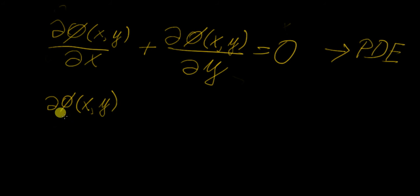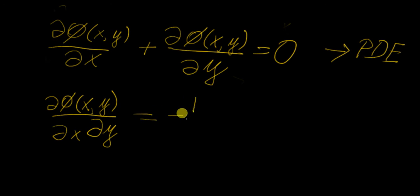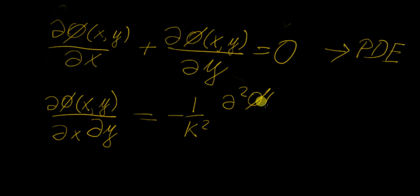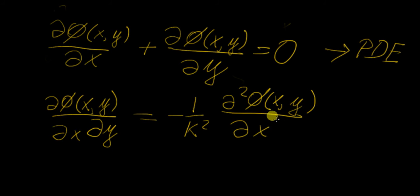We can have something like a mixed derivative thrown in, and then on the other side we can have something like 1 over k squared, which is a constant, and then the second derivative of psi(x,y) with respect to x — so that would be another example of a partial differential equation.